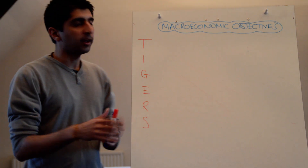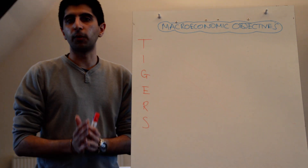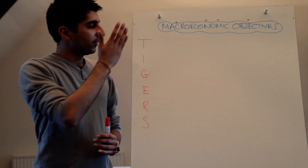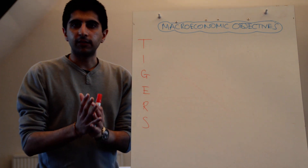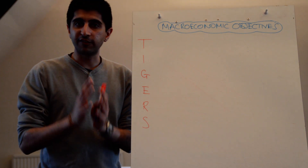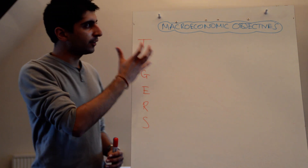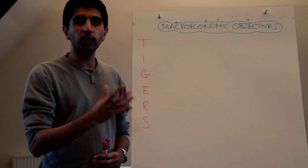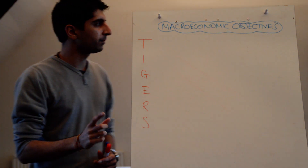To help the government actually assess the performance of the macroeconomy, the government has specific objectives and specific indicators which they focus on. These can be categorised by four key things, and a few other smaller things on the side as well.